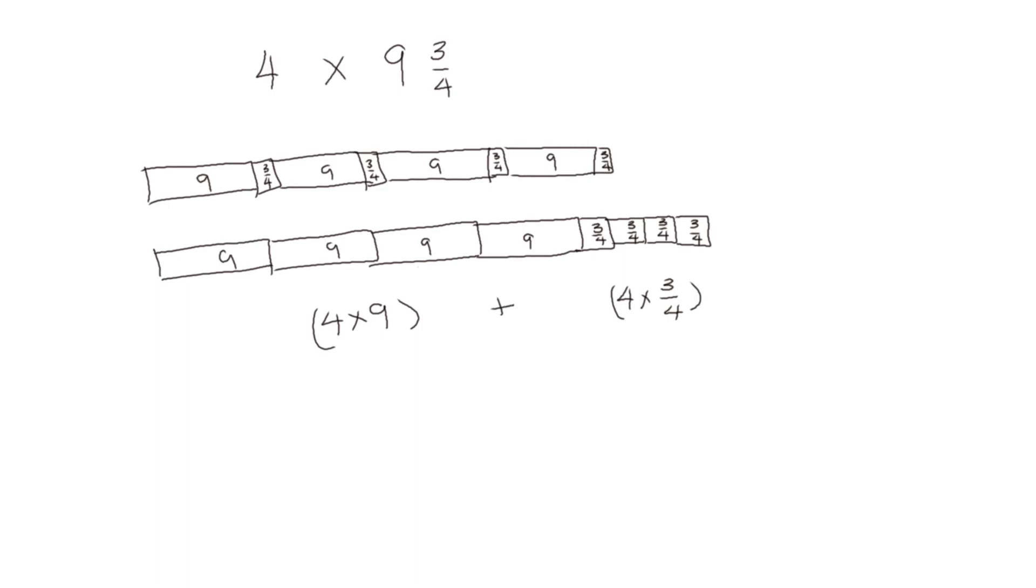If you can skip the step of drawing the tape diagram, you can go directly by distributing 4 over the whole number 9 and then 4 over 3 fourths. Then we solve these two: 4 times 9 is 36 plus 4 times 3 fourths would be 12 fourths, which simplifies to 3. When we complete our addition, our sum would be 39.